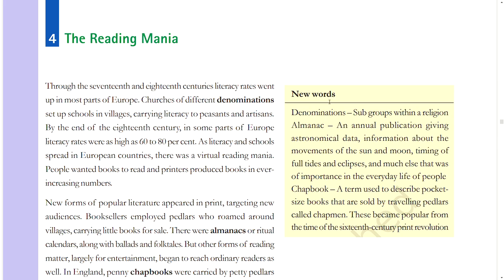Section 4: The Reading Mania. Through the 17th and 18th centuries, literacy rates went up in most parts of Europe. Churches of different denominations set up schools in villages, carrying literacy to peasants and artisans. By the end of the 18th century, in some parts of Europe, literacy rates were as high as 60 to 80 percent. As literacy and schools spread in European countries, there was a virtual reading mania — people wanted books to read, and printers produced books in ever-increasing numbers.